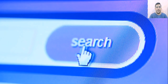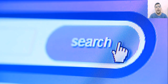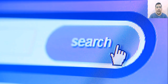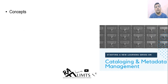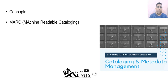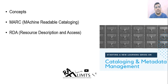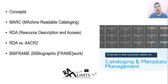Hello and welcome to RAF Limits. This is Farrokh Hussain and today we are going to start a new series on cataloging and metadata management. In this series, initially we will cover the basic concepts, then we will talk about MARC — what is MARC and how it works — and then we will discuss RDA in detail. We will also discuss BIBFRAME, which is going to replace MARC in the future.